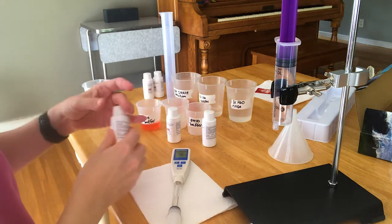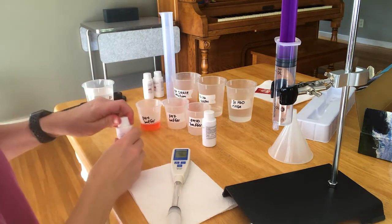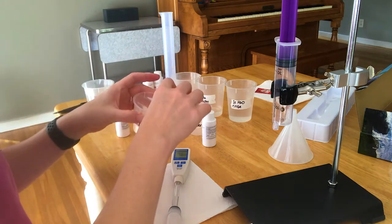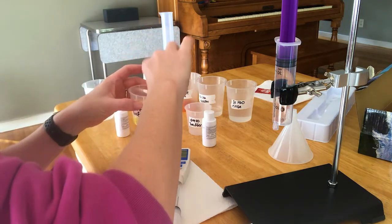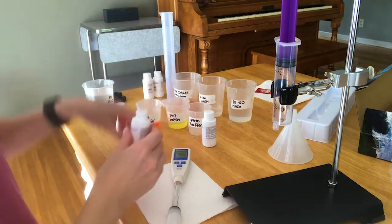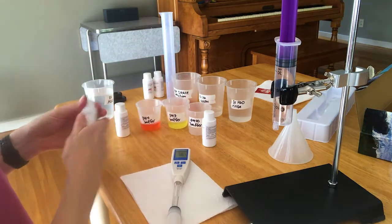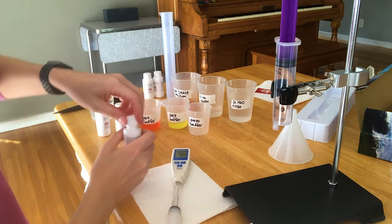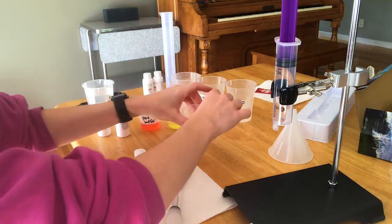It's really cool because they add coloring so that you can easily tell the difference between these buffers. Typically, the pH 4 buffer is this pink color. The pH 7 is yellow. I bet you can guess what the pH 10 is. Purple. Just kidding. It's blue.